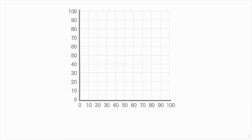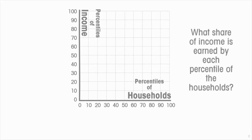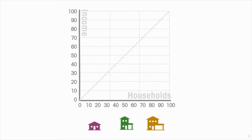We're going to use a graph that on the horizontal axis shows percentiles of households and on the vertical axis shows percentiles of income. What we want to reflect is what share of income is earned by each percentile of households. For simplicity, let us pretend that we have an economy with only three households.